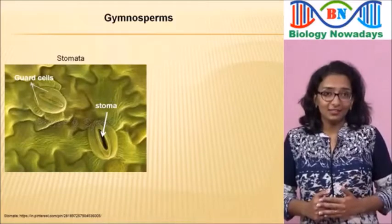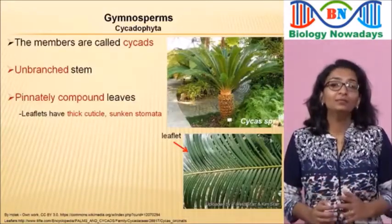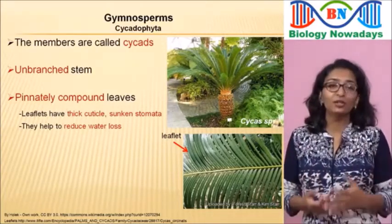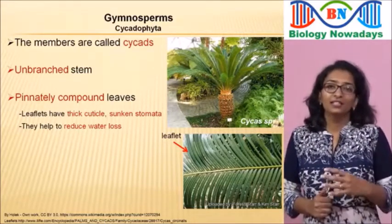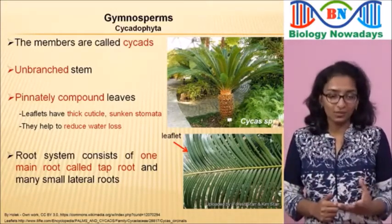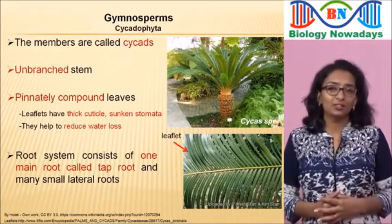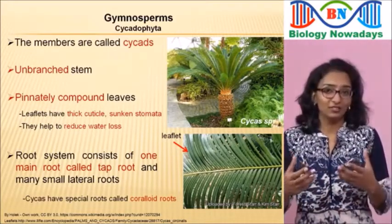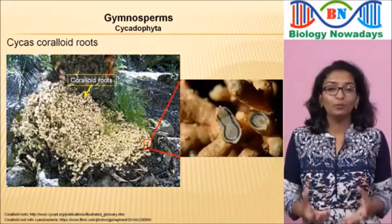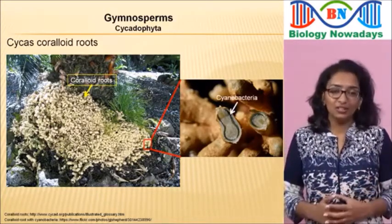In gymnosperms, the guard cells and stomata are sunken. The thick cuticle and sunken stomata help to reduce water loss. These adaptations help gymnosperms to withstand extremes of temperature, humidity, and wind. Gymnosperms have tap roots — one main root with many smaller lateral roots. Cycads have special roots called coralloid roots, which grow upwards. These coralloid roots harbour cyanobacteria that fix nitrogen and help cycads to grow in nitrogen-poor soils.